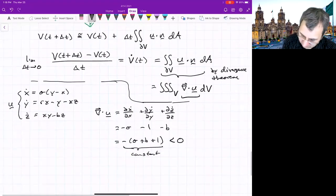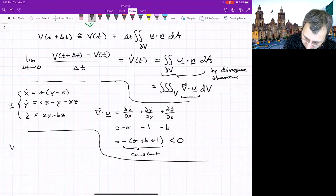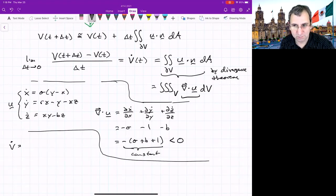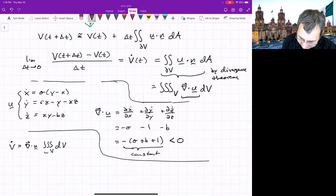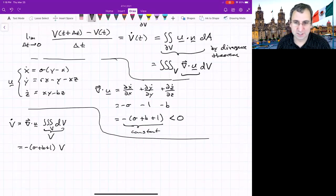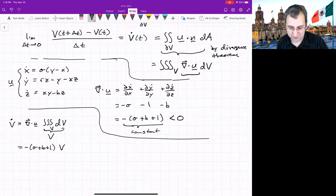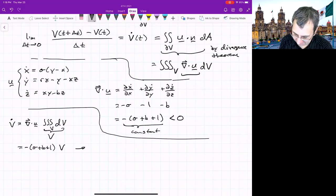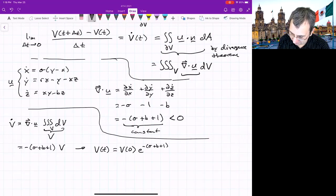Well, let's plug this back in to what we have for the formula. We have v dot equals this divergence, which because it's constant, we could pull it out of the integral. And then we just have a triple integral over the volume, which is just the volume. So here we have negative sigma plus b plus 1 v. And this is just a one dimensional ODE with a constant coefficient. So it could be integrated. V as a function of time is whatever v is initially times e to the negative sigma plus b plus 1 t.